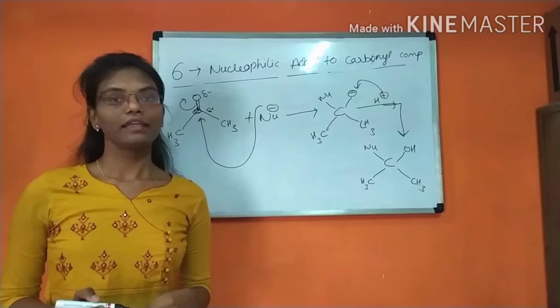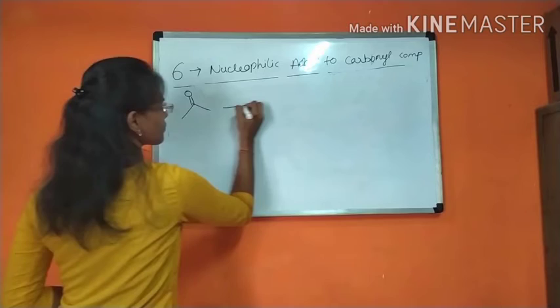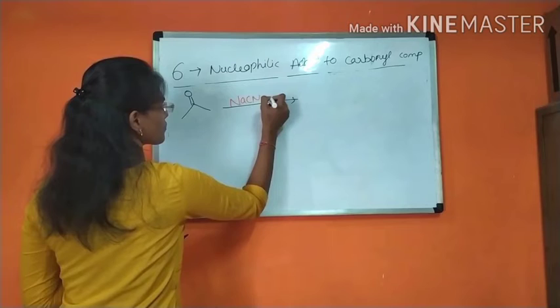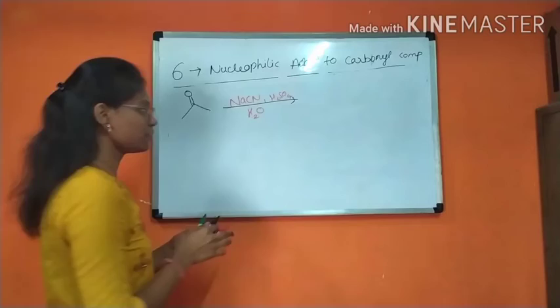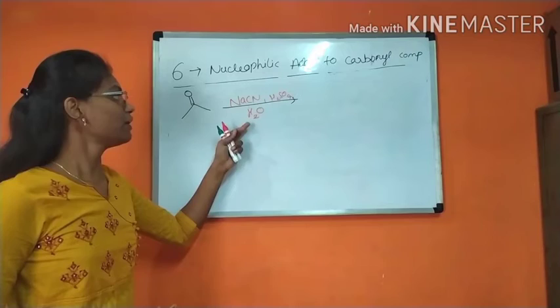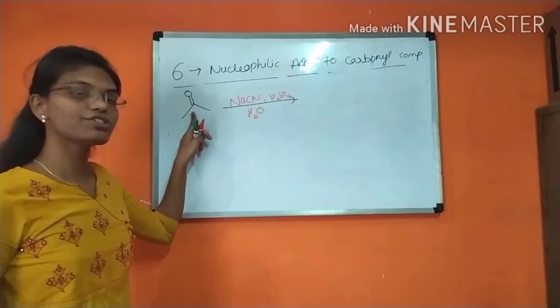Let's see some more examples. Here, the NaCN is acting as a reagent. It consists of cyanide ion as a nucleophile and water is acting as a proton donor. Here we are using sulfuric acid for the activation of the carbonyl carbon.